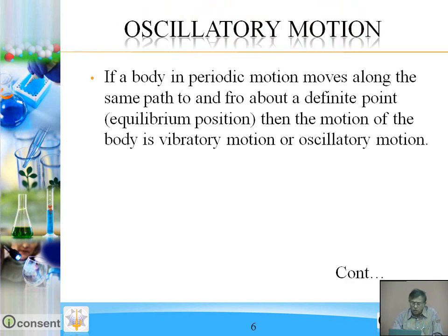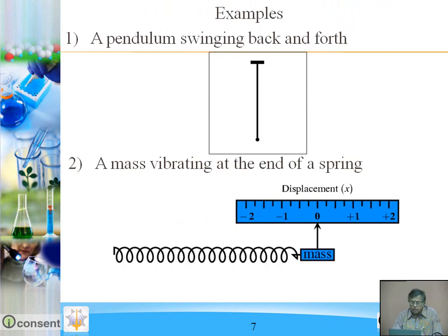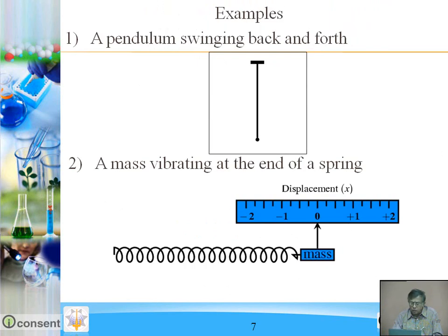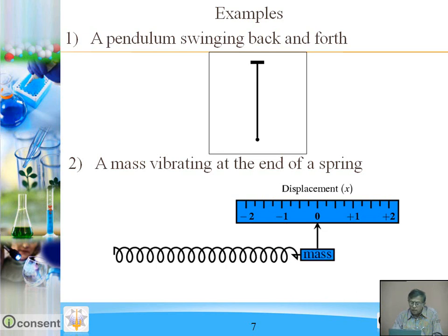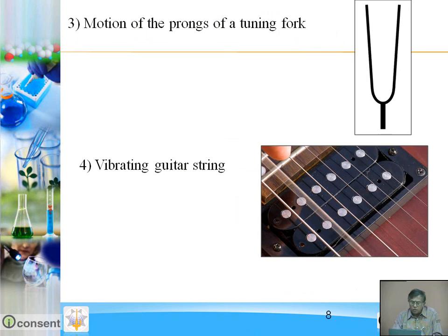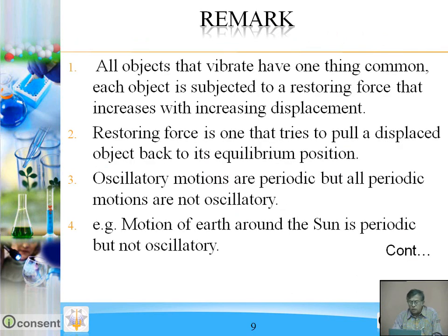Next is oscillatory motion. If a body in periodic motion moves along the same path to and fro about a definite point, then the motion of the body is vibratory or oscillatory motion. Examples: a pendulum swinging back and forth, a mass vibrating at the end of a spring, the motion of the prong of a tuning fork, and a vibrating guitar string.